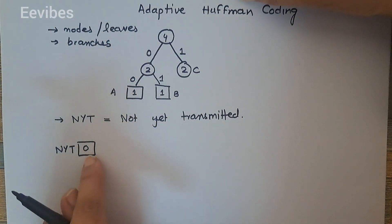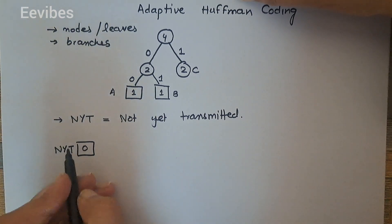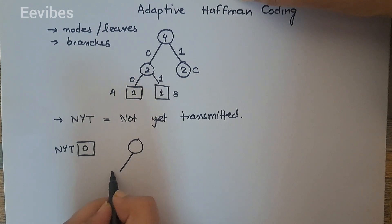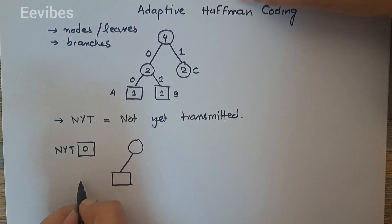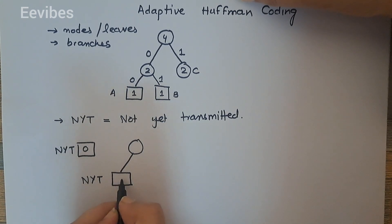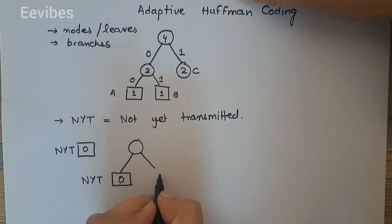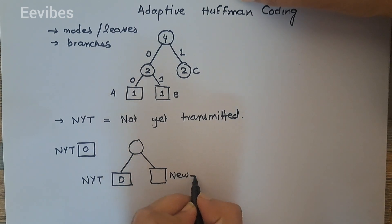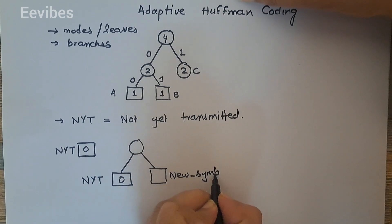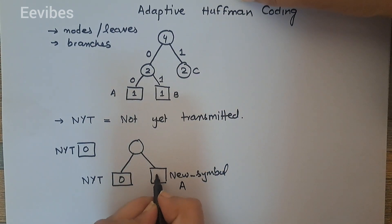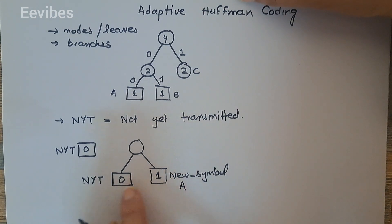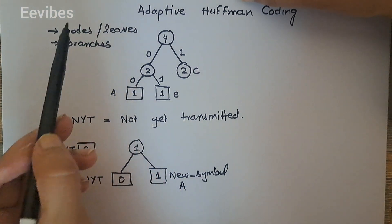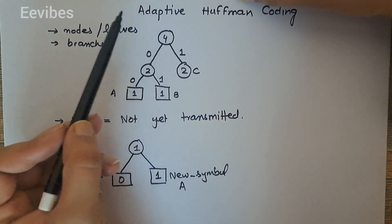Every time a new symbol arrives, the NYT will generate two new nodes: one will be a new NYT node again having value zero, and the other will be a space for the new symbol — let's suppose 'a' — with its weight written. Then zero plus one becomes one. This is the first step you must remember in the adaptive Huffman coding scheme.